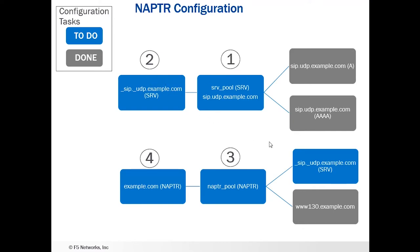We're then going to use that wide IP in the NAPTR pool associated with the NAPTR record. We're going to use that SRV wide IP and one of our A or Quad A wide IPs, so that we can see both types in this NAPTR pool. And then we're going to associate that NAPTR pool with an example.com NAPTR record.